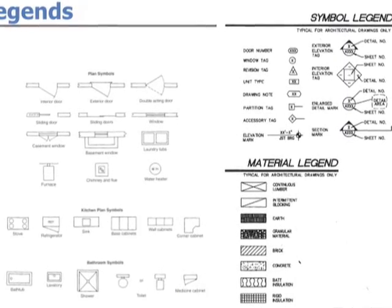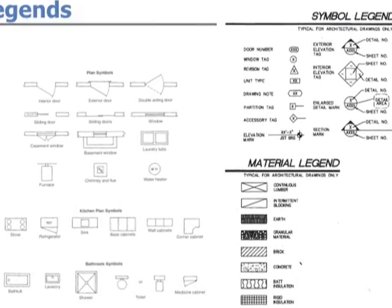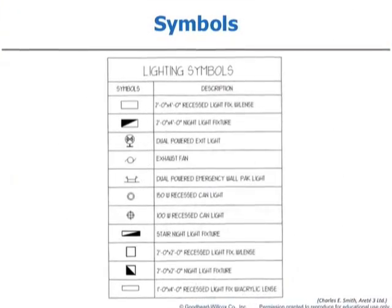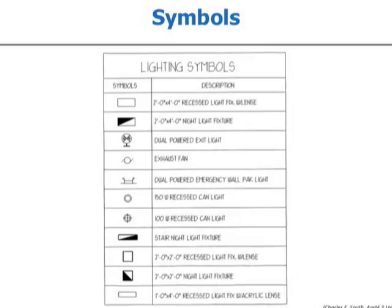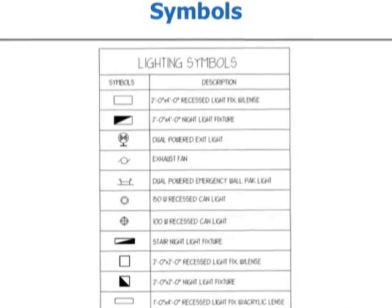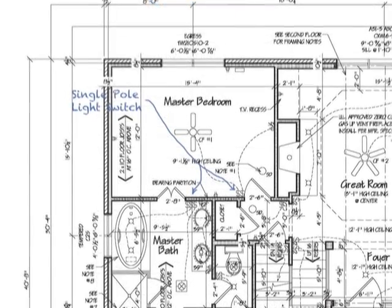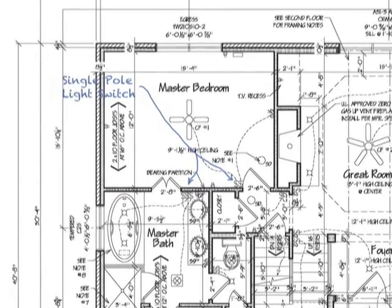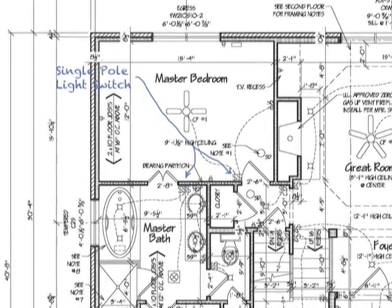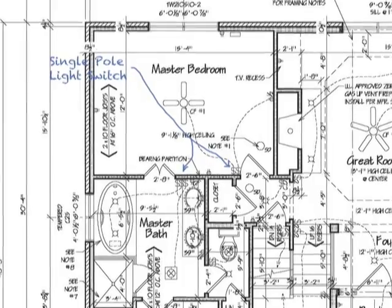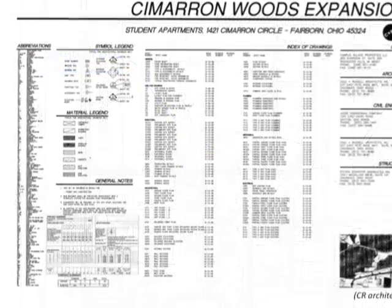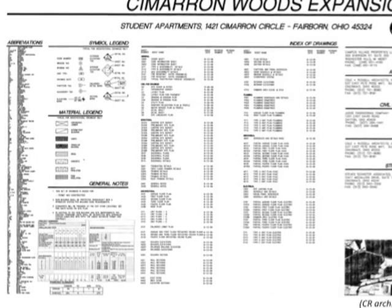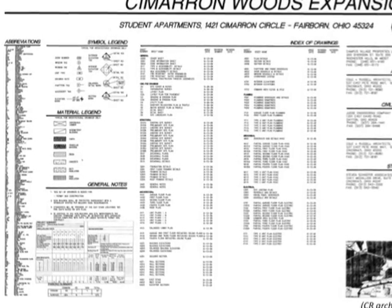Symbols and legends: symbols are the graphic indicator of a group of words that refer to an object, item, or something that will be repeated multiple times on a drawing. It is easier to use a symbol to indicate a single pole light switch than it is to write 'single pole light switch' each time on the drawing. These symbols will be defined on the notes page or the title page of the documents in a symbol legend.